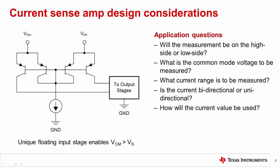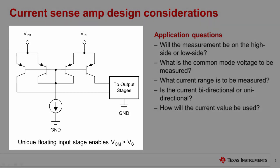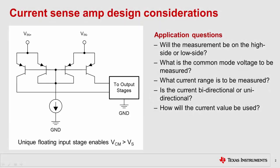Let's start with a quick recap on what makes a current sense amplifier special. First and most important is their unique floating input stage, which allows for common mode voltages much greater than the supply rail. Second is the integrated precision gain network that maximizes accuracy and minimizes drift.